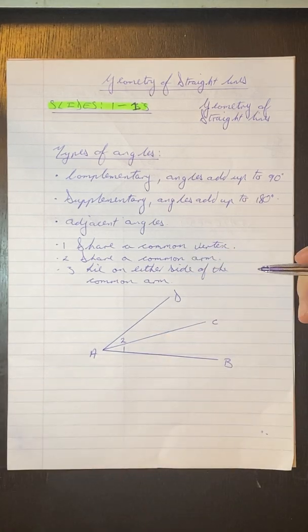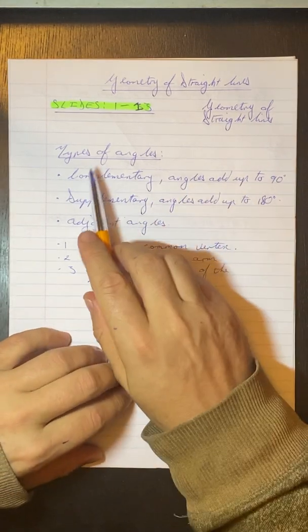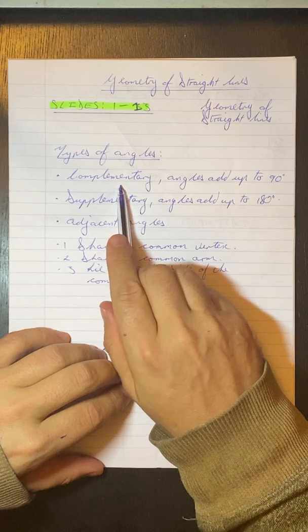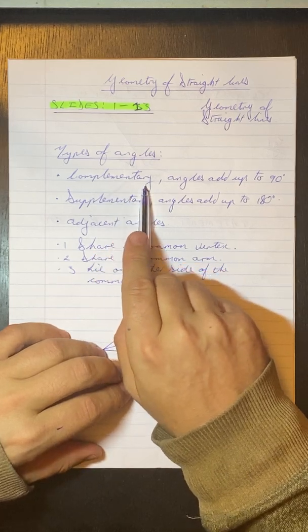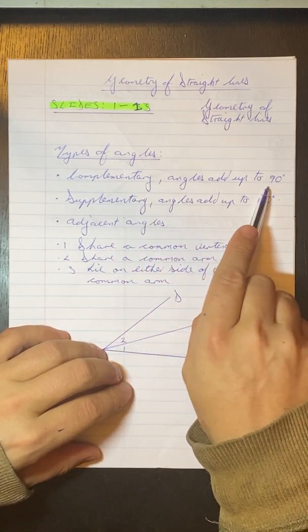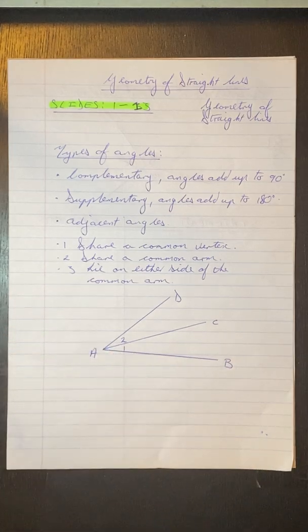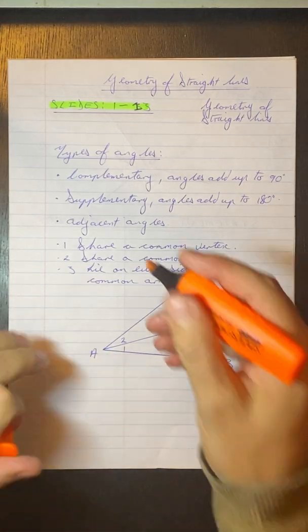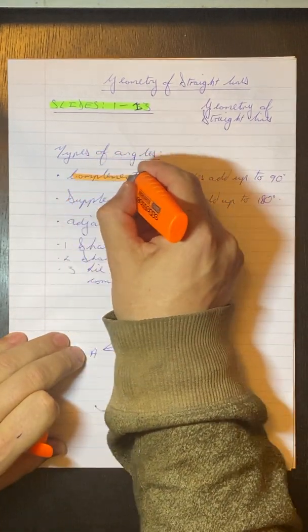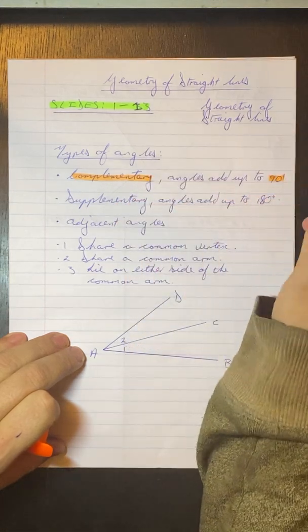Now just to recap on some of the definitions on types of angles, we have a Complementary Angle. Those are angles that add up to 90. Just remember that, please Grade 9s. Complementary means add up to 90.